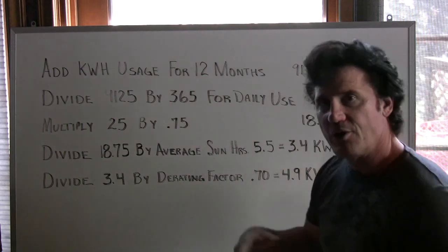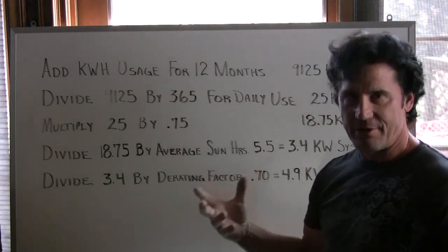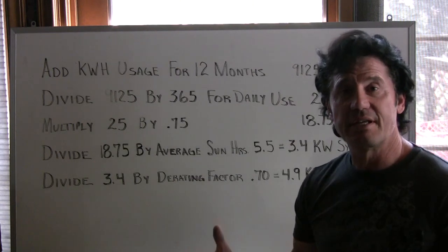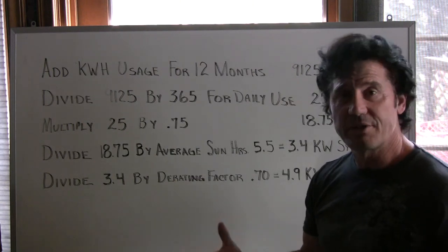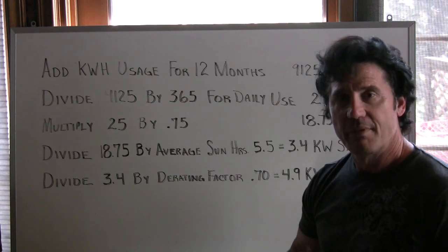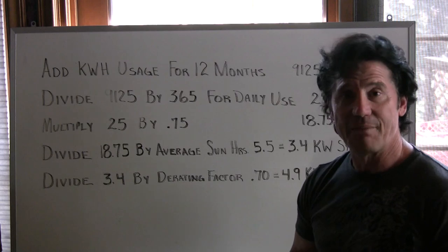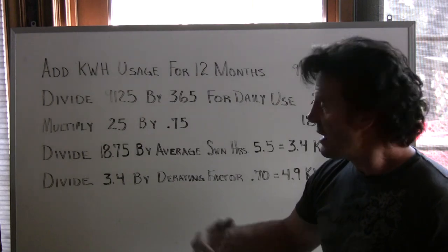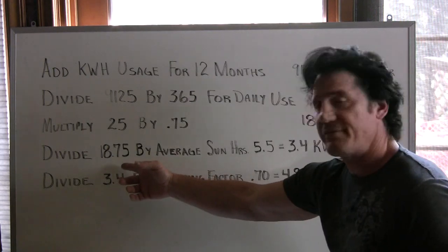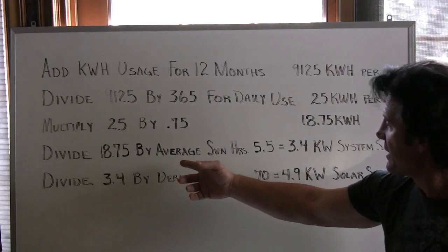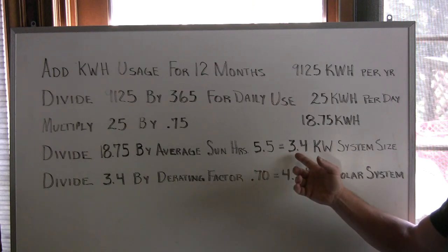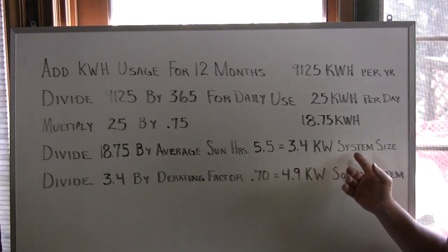Now you want to divide that by your average sun hours. Each state and city is different. I'm in Sacramento, California, so we're going to use Sacramento. Sacramento's average sun hours is 5.5. So on the board you'll see we take the 18.75 and divide it by 5.5, and that comes up with a 3.4 kilowatt system size.